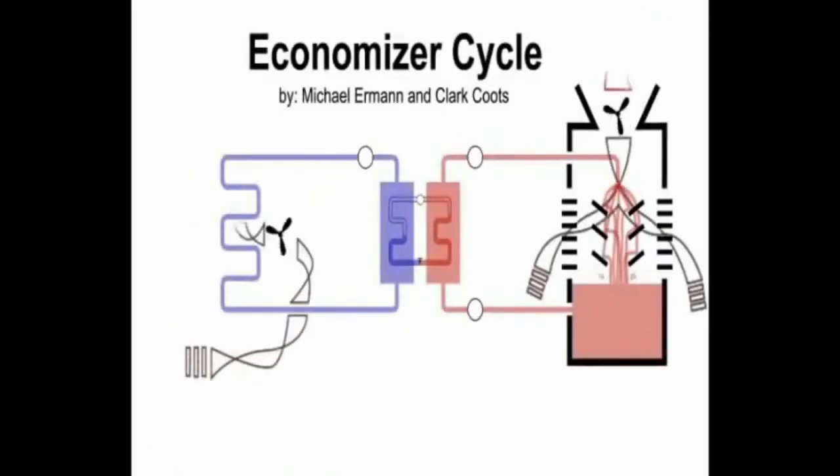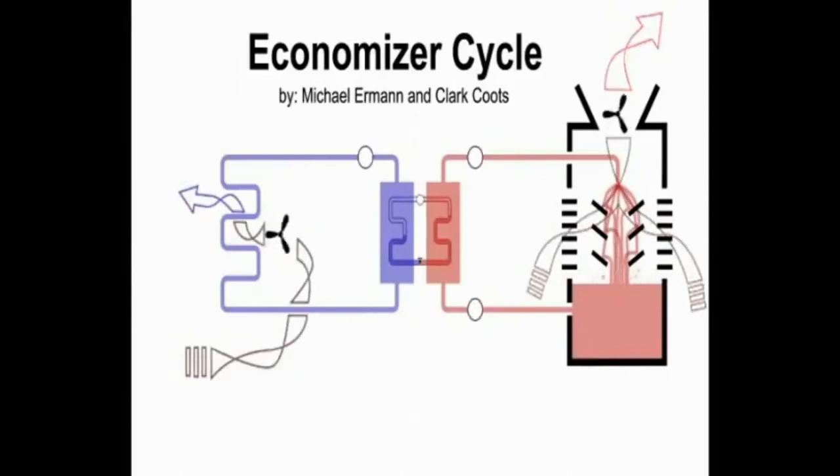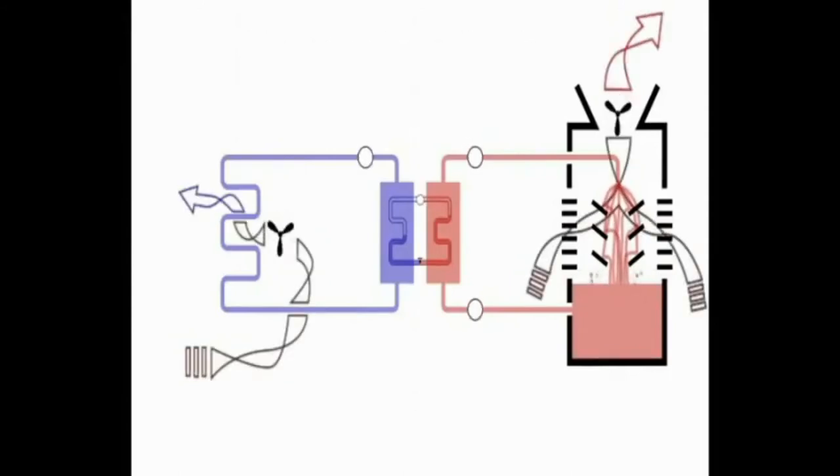Economizer cycle. Buildings, especially in the interior of large structures, often require mechanical cooling even on very cold nights. This is because the heat generated inside the building by people, lighting, and equipment will offset some of the heat losses through the building envelope.